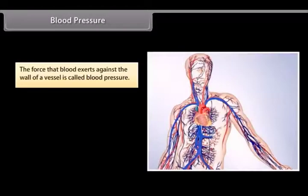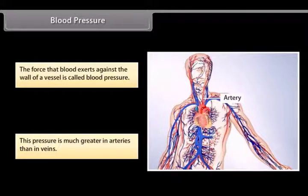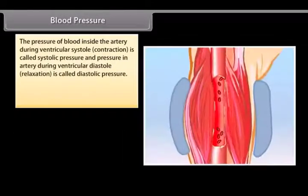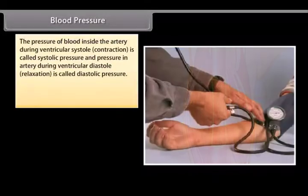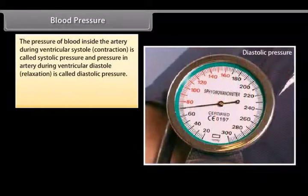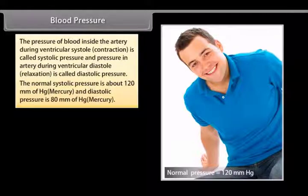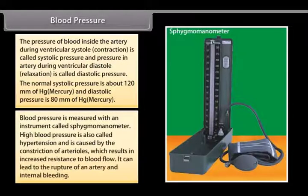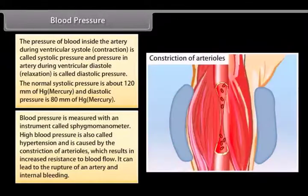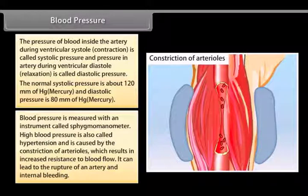Blood pressure. The force that blood exerts against the wall of a vessel is called blood pressure. This pressure is much greater in arteries than in veins. The pressure of blood inside the artery during ventricular systole contraction is called systolic pressure. The normal systolic pressure is about 120 mm of mercury and diastolic pressure is up to 80 mm of mercury. Blood pressure is measured with an instrument called sphygmomanometer. High blood pressure is called hypertension and is caused by the constriction of arterioles which results in increased resistance to blood flow. It can lead to the rupture of an artery and internal bleeding.